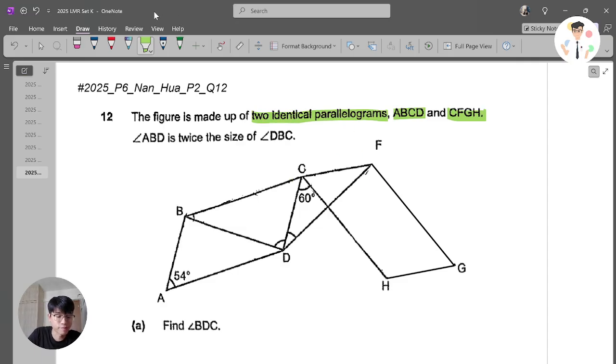Now, a very important keyword here is the word identical. I repeat the word identical here will be extremely important. It means that they are two same parallelograms, but the orientation can be slightly different. Now, another keyword here is ABD is twice the size of DBC. This here is twice the size here. It means that if here is two units, here will be one unit.